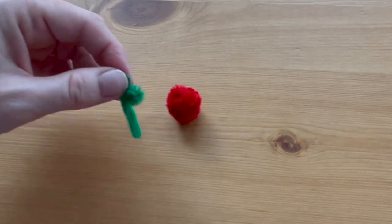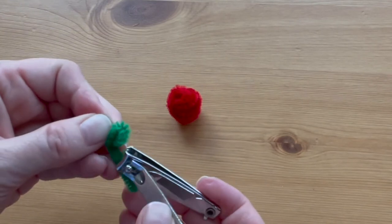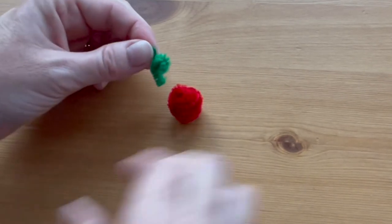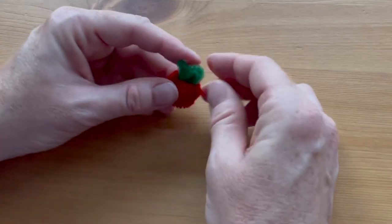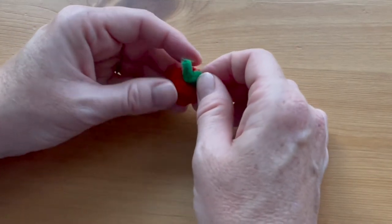Then the rest of the pipe cleaner down and clip off the excess leaving just a small tail. Poke the tail into the top of the apple. And you're finished!